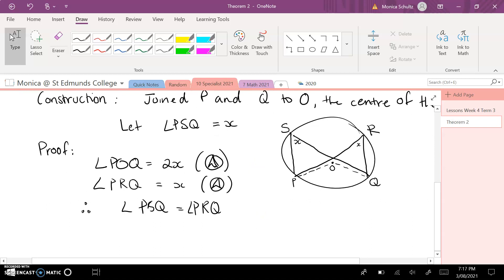So therefore, I can state that angle PSQ is equal to the angle of PRQ, because they're both connected to POQ, which is 2X, which makes them both X.